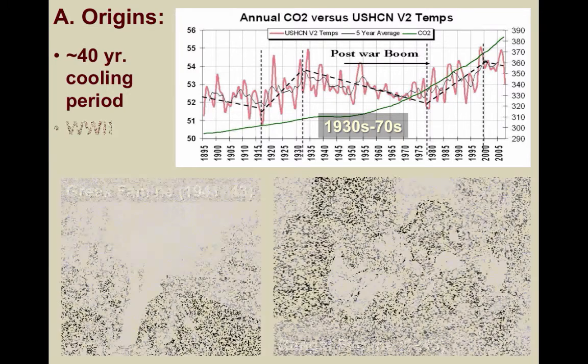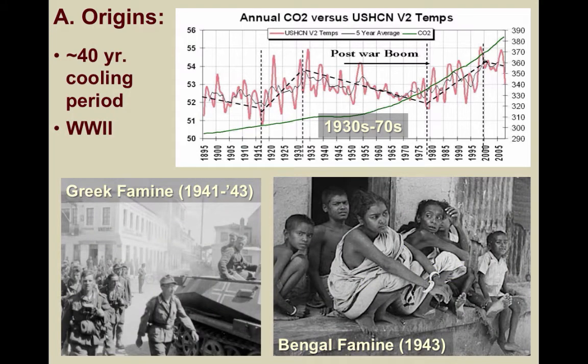Especially during World War II, a series of famines plagued the planet. For instance, as a result of German occupation in places like Greece, a man-made famine ensued, where the Axis forces purposely withheld the importation of food and supplies. One of the worst famines in history occurred in the Bengal region of India, where an estimated 3 million people starved to death in 1943.